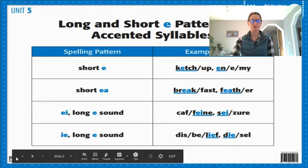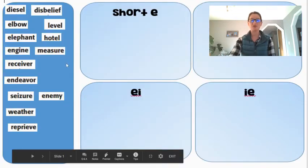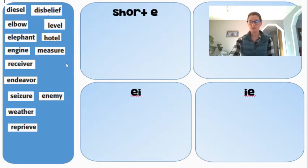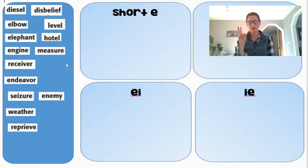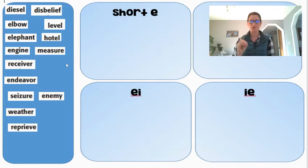So you are actually going to sort these words. I'm going to read you these words so that you hear them, and when you do this sort, I want you to say the words to yourself too and listen. Is there a short E or a long E? Is the E saying its name 'ee' for the long sound, or 'eh' for the short sound? Then you're going to find the spelling pattern.